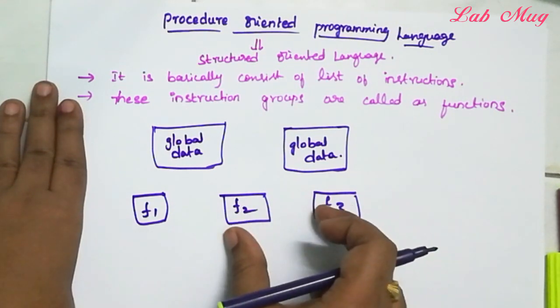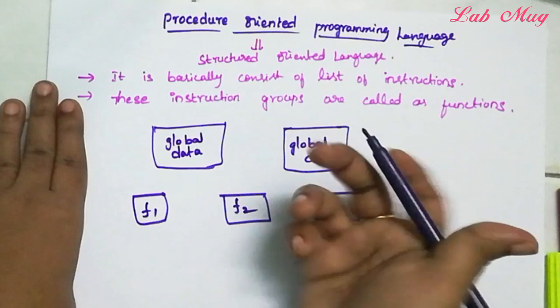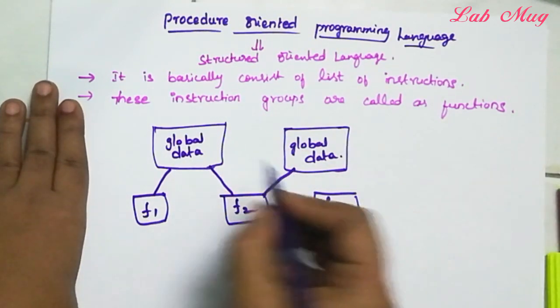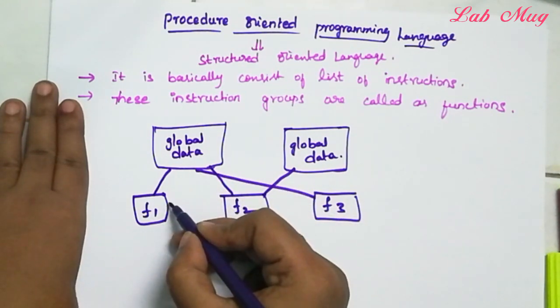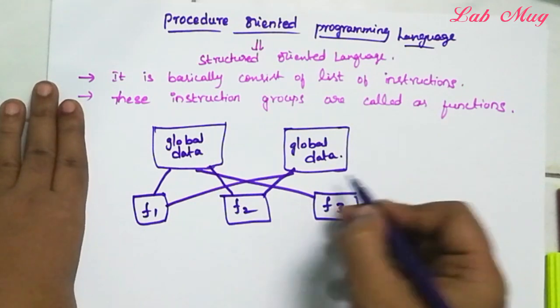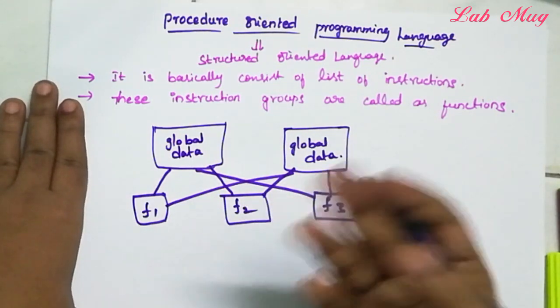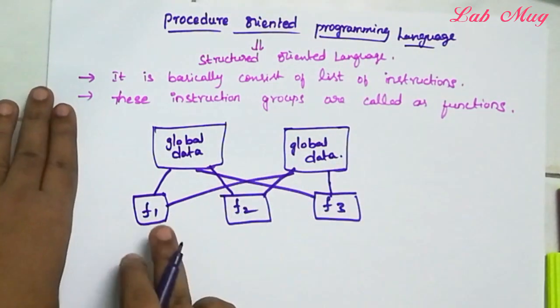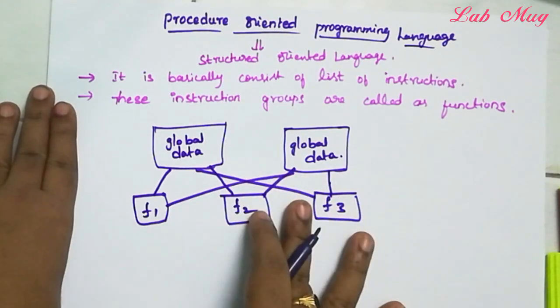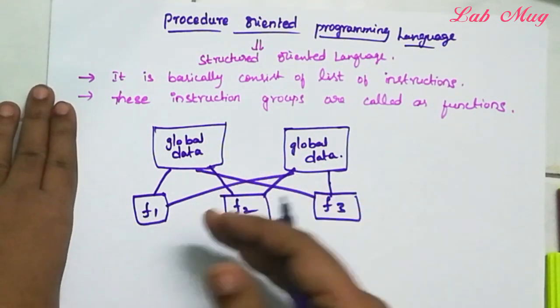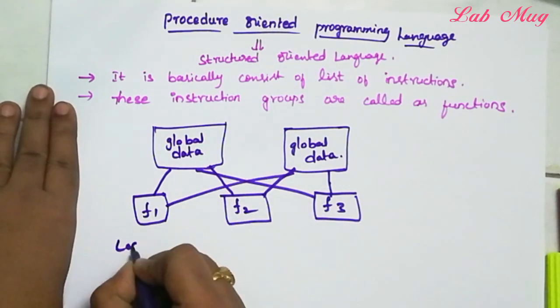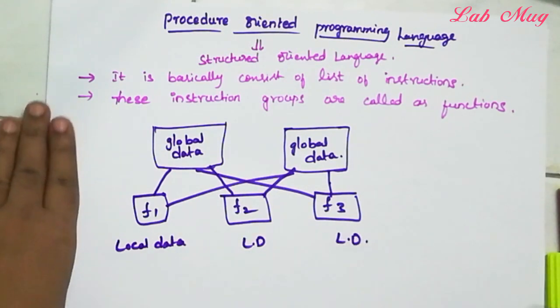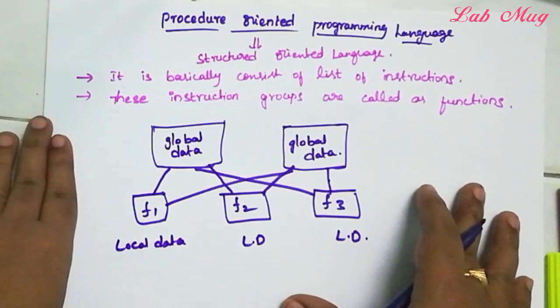Every procedure oriented language, every function accesses some global data. We may access more global data. Every function accesses every global data. And sometimes we access global data 1 and sometimes global data 2. So when F1, F2, F3 access, these are global data. Separately we also have some local data. So local data is also there.